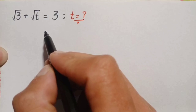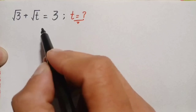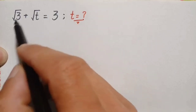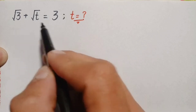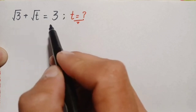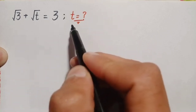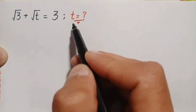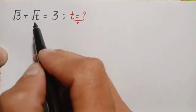Hello everyone, you are welcome to solve this interesting radical math problem, which is: square root of 3 plus square root of t is equal to 3. We will try to find out the value of this unknown t.